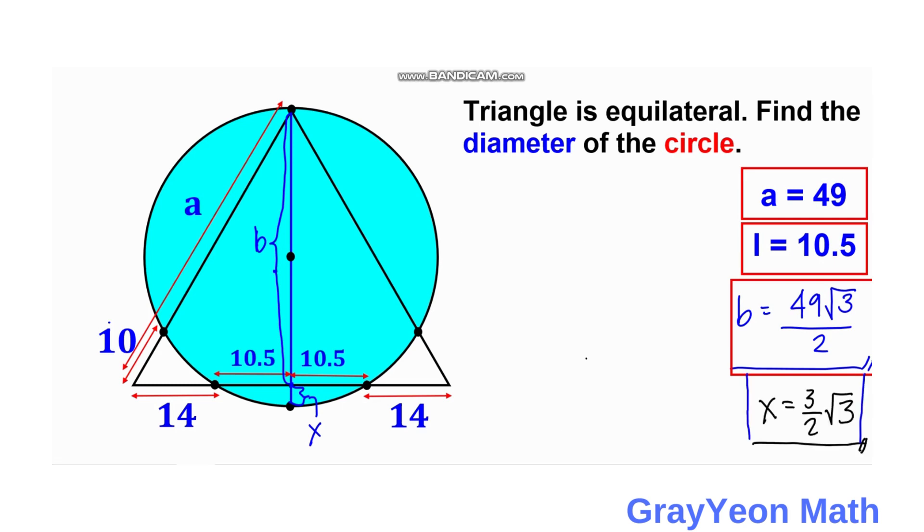Okay, so now for the final step is we get the diameter and the diameter is just equal to B plus X. So diameter is equal to 49 over 2 square root of 3 plus 3 over 2 square root of 3, so we have 49 plus 3 is equal to 52. So 52 divided by 2 is equal to 26, so diameter is equal to 26 square root of 3 units and that is our answer.